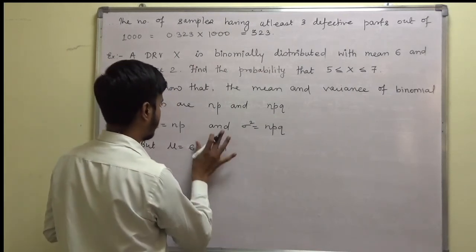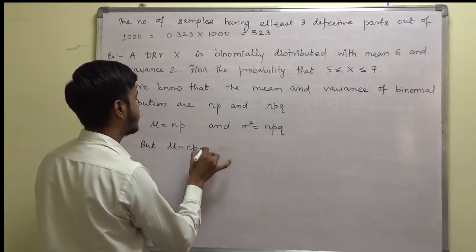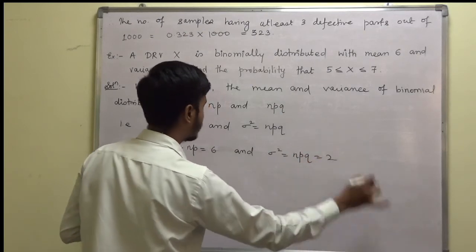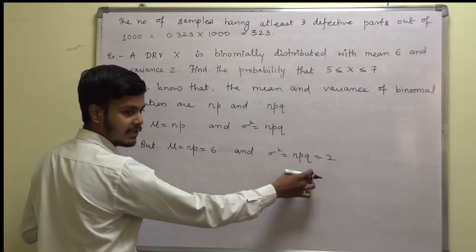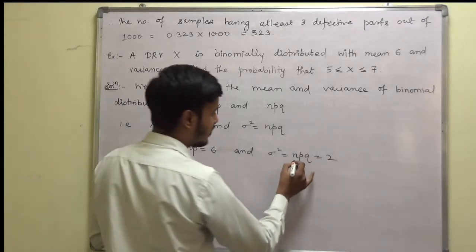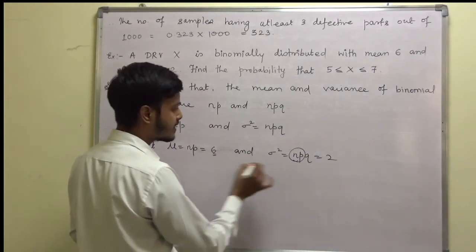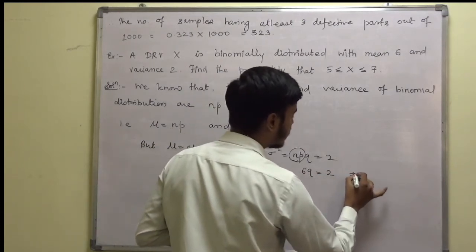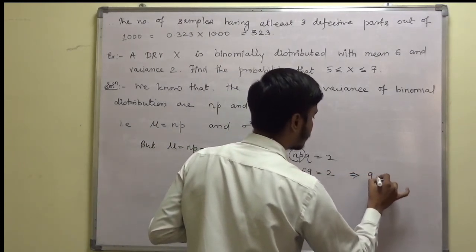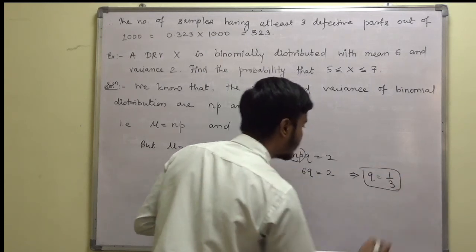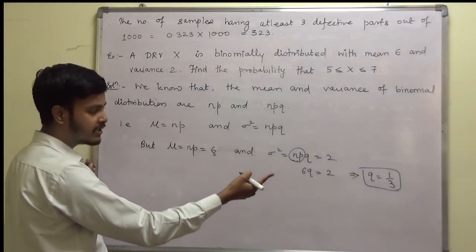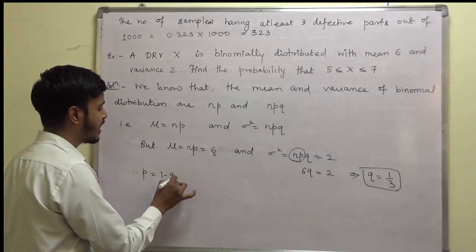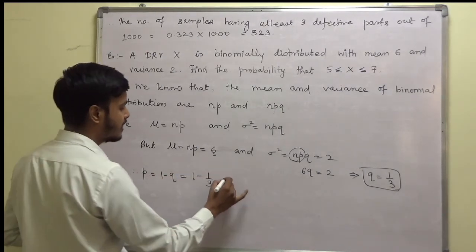Since np equals 6, I can substitute it into the variance equation: 6q equals 2, so q is equal to 2 by 6, which is 1 by 3. Therefore p is equal to 1 minus q, so 1 minus 1 by 3 is 2 by 3. So p is 2 by 3 and q is 1 by 3.